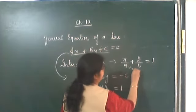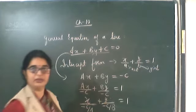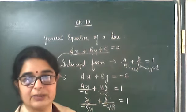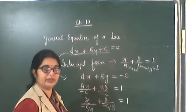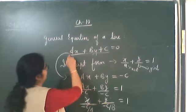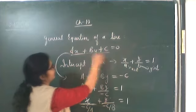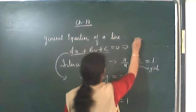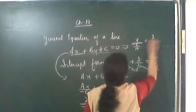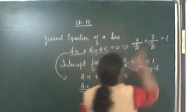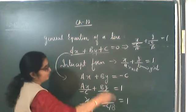From the intercept form you can directly read off: the x-intercept is minus c upon a, and the y-intercept is minus c upon b. So if you remember these, you can write the intercept form directly without going through all steps.